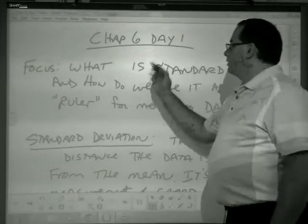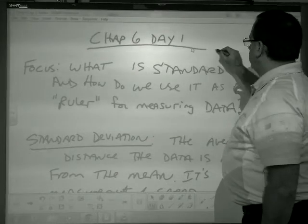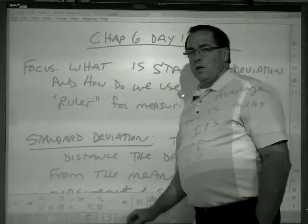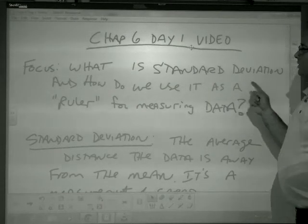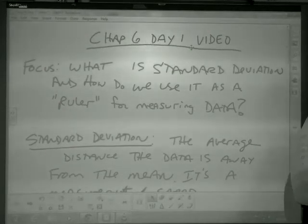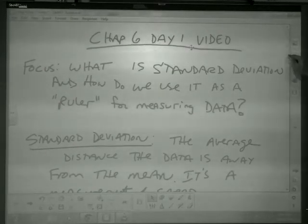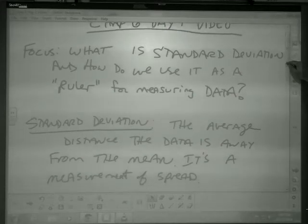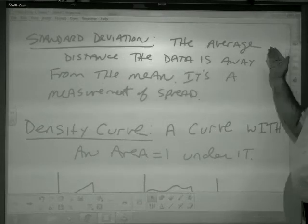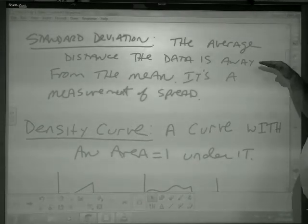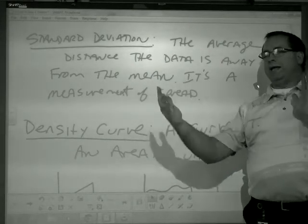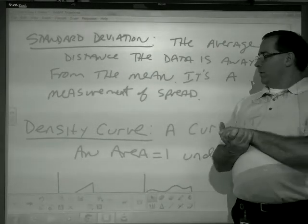Okay, so chapter six day one, here's the video. We're going to focus on what is standard deviation and how do we use it as a ruler for measuring data. Now we watched a video on standard deviation. We took down this note last time that standard deviation is the average distance the data is away from the mean and it's a measurement of the spread of the data. We got that down last time.